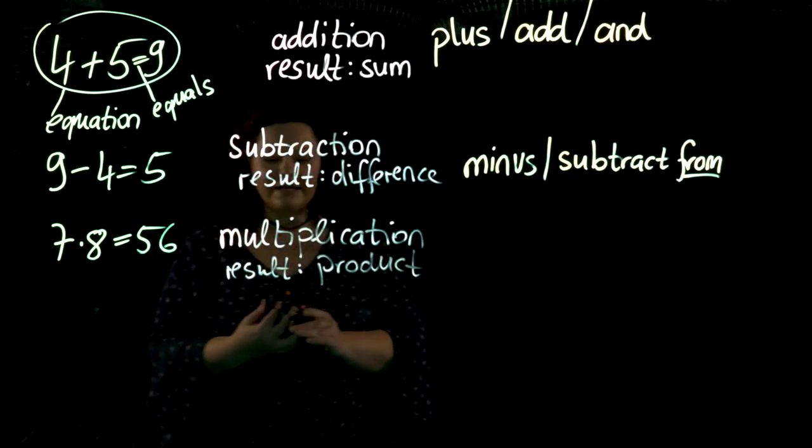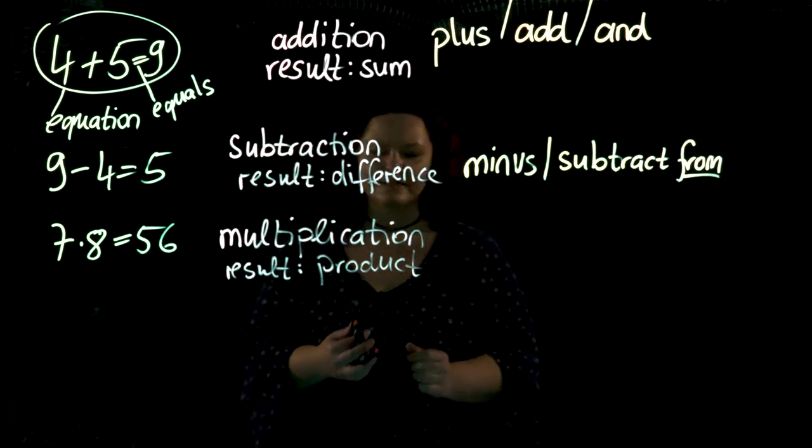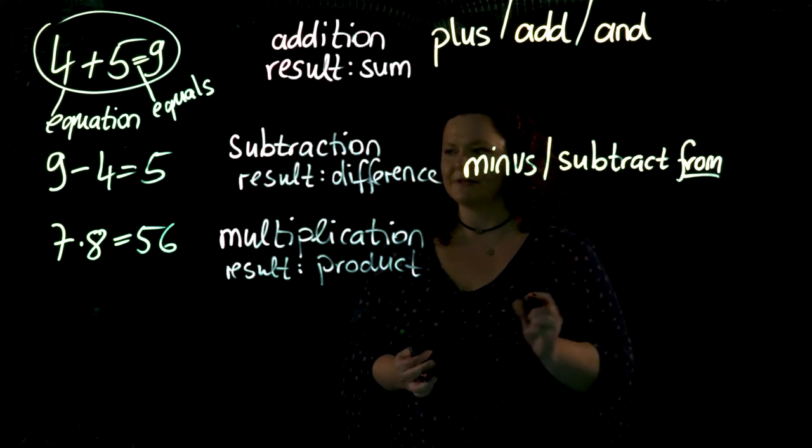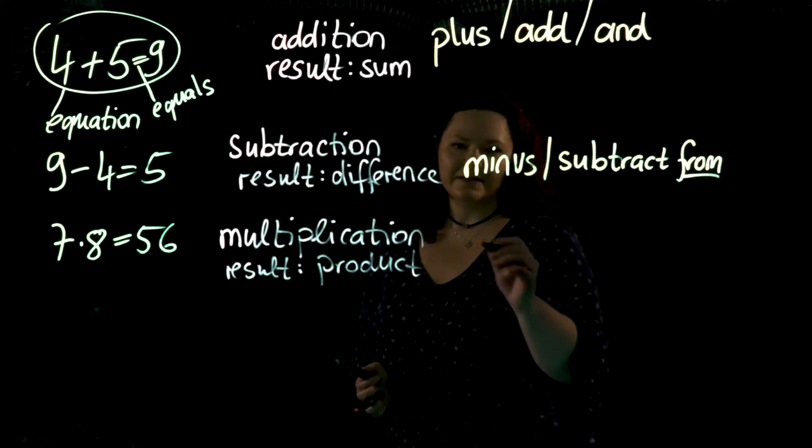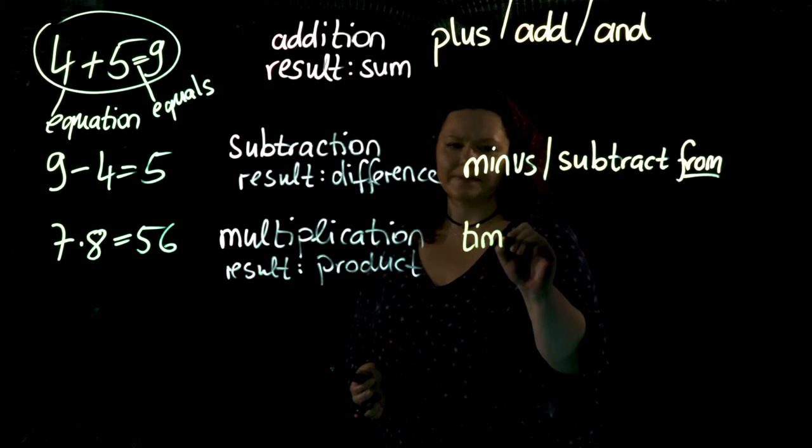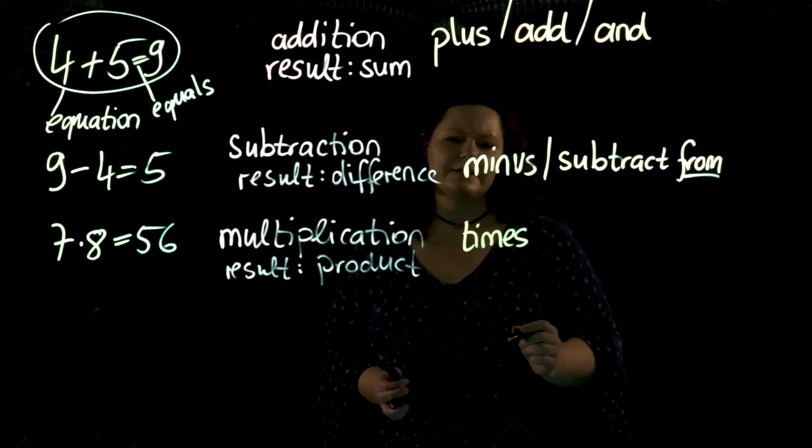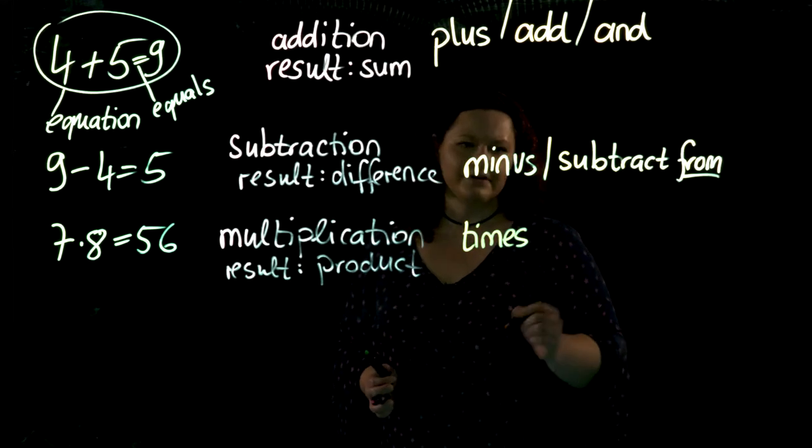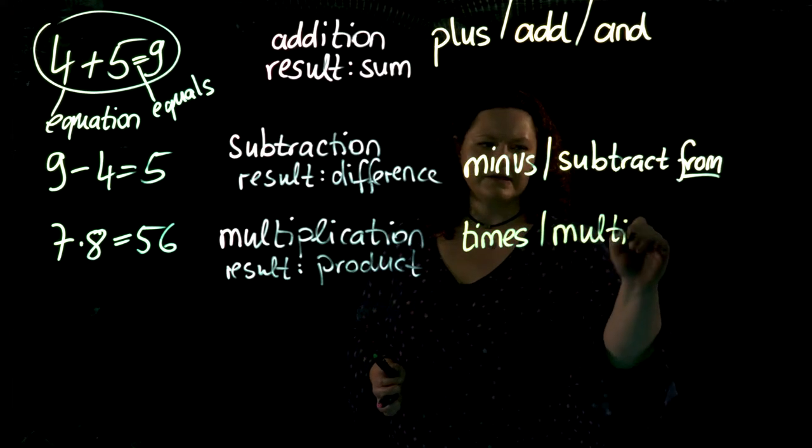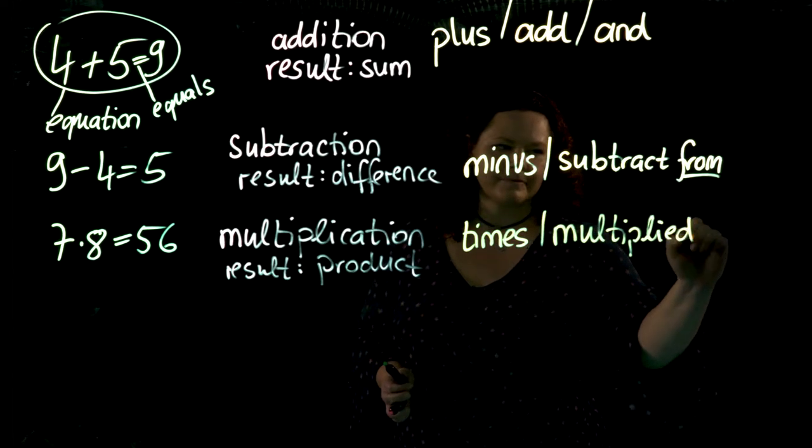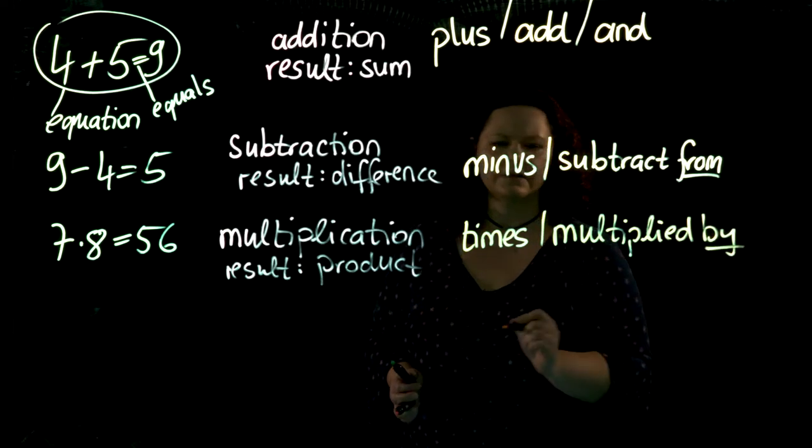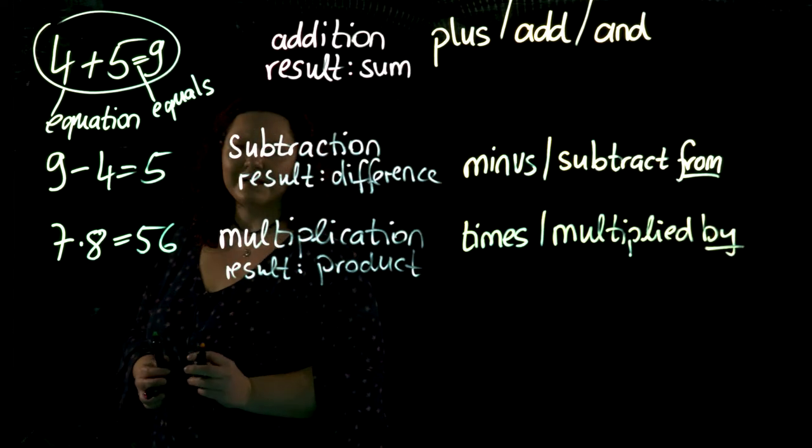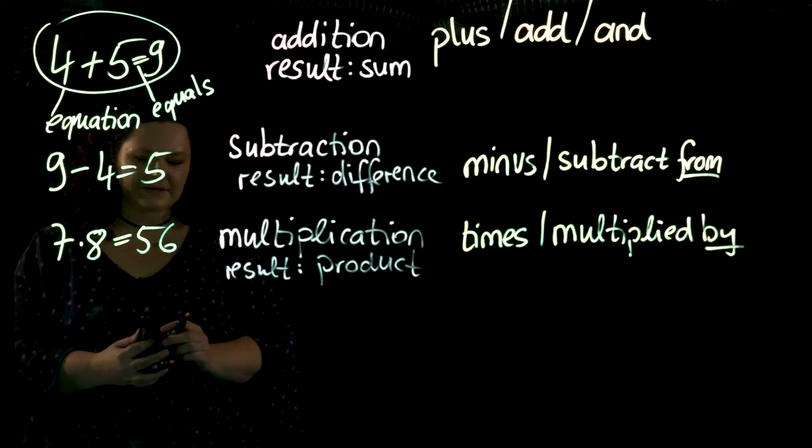How do we say that? Just like for minus and subtract from, there are two different ways. The first one is easy: times. Seven times eight is 65. Or I say multiplied by. Note the preposition here is by: seven multiplied by eight equals 65.